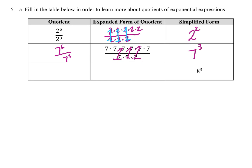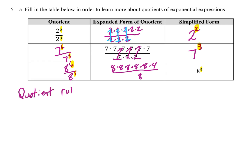The last one I'll represent as 8 to the 6th divided by 8 to the 1st. The pattern shows exponents of 5 and 3 give 2, 6 and 3 give 3, and 6 and 1 give 5 — that's subtraction. When we divide and cancel, we are removing or subtracting some of the repeated multiplications. That gives us the quotient rule: a to the x divided by a to the y equals a to the x minus y.